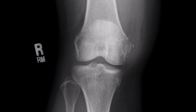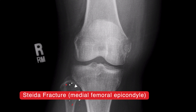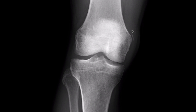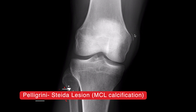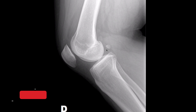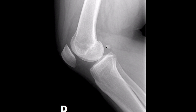In this case you can see a medial femoral epicondyle fracture called a Stieda fracture. Sometimes these can be missed or may not be visible on the initial radiograph, and a later radiograph may show what's called a Pellegrini-Stieda lesion, which is calcification within the proximal medial collateral ligament. This bone is called the Fabella, a commonly seen sesamoid bone within the lateral tendon of the gastrocnemius muscle near its attachment on the femur.